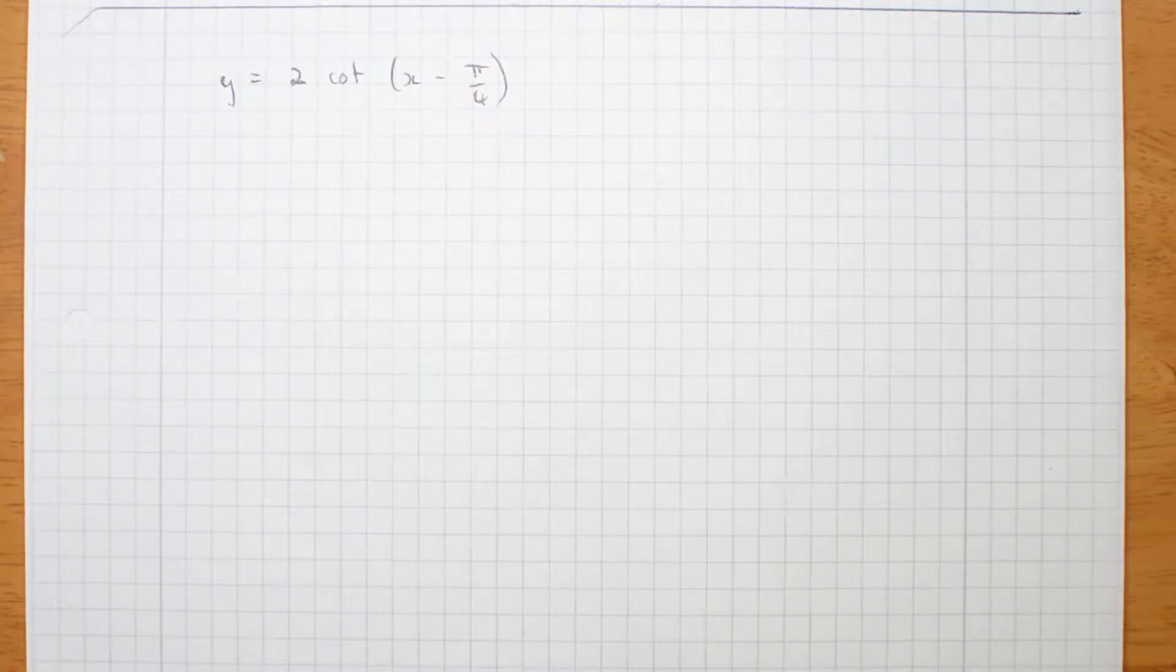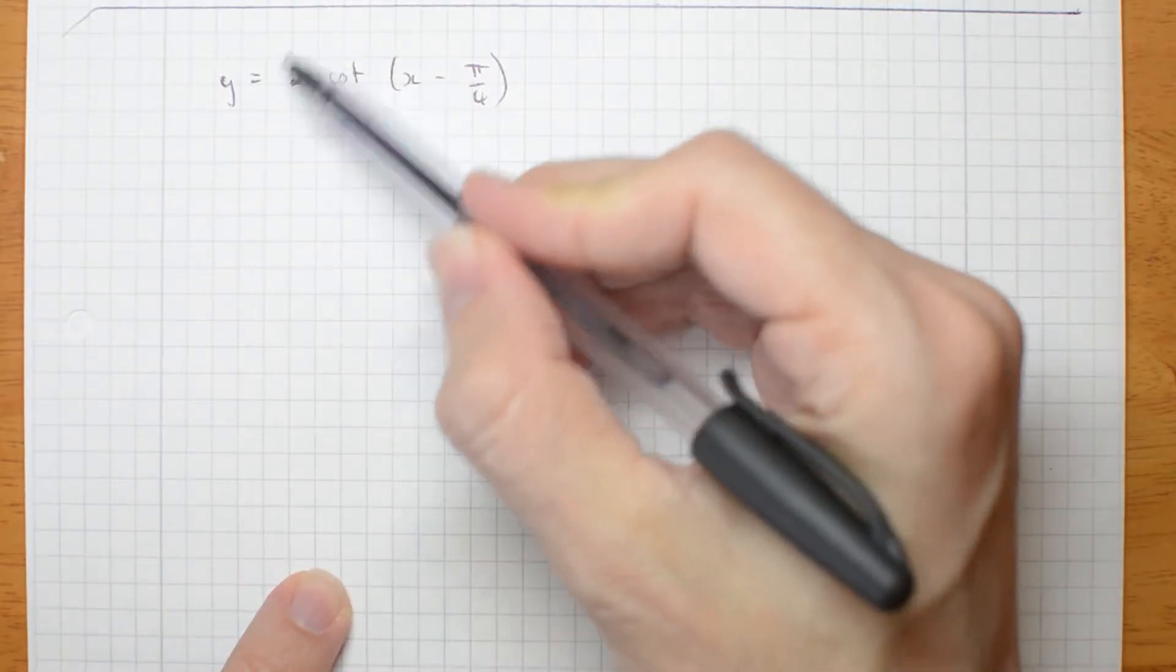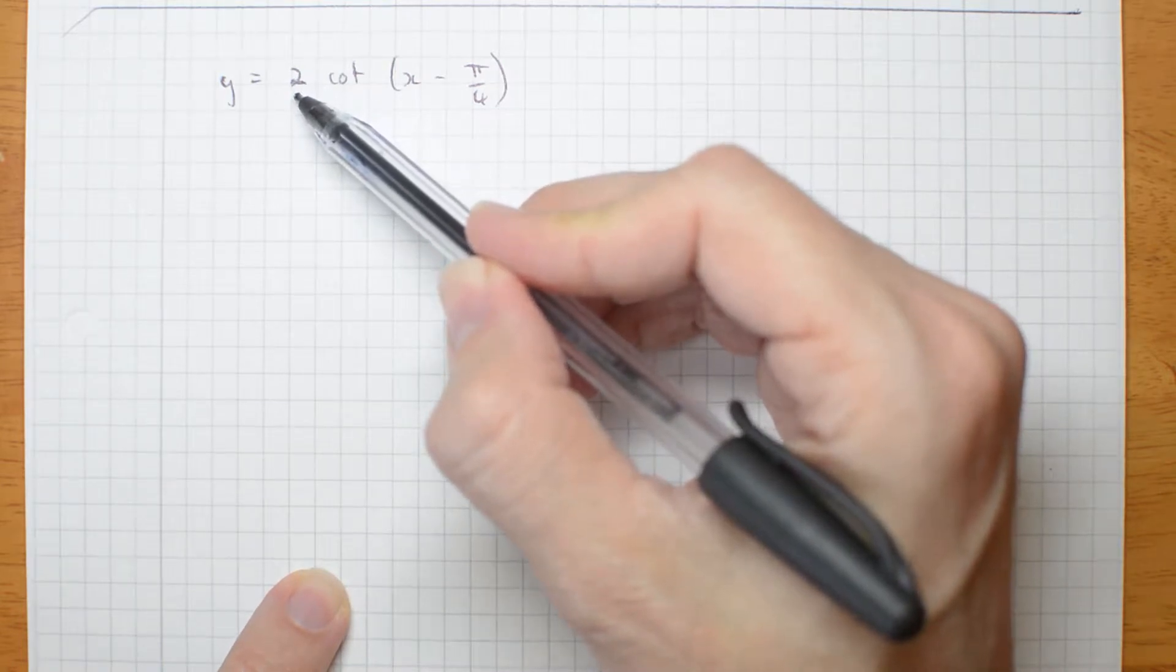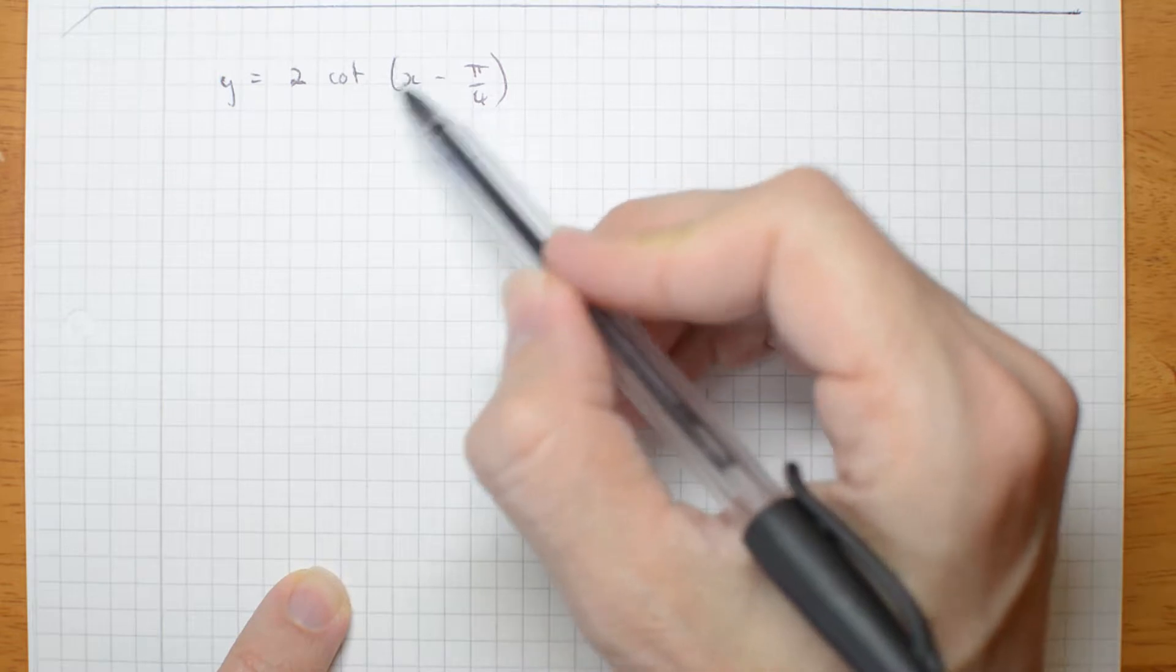y equals 2 cot x minus pi on 4. It's going to have a vertical dilation of 2. It's not really an amplitude. Tan and cot don't have amplitude. There's no horizontal dilation, so the period is pi.